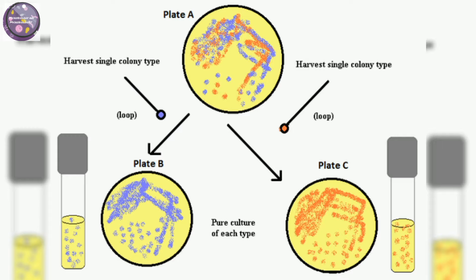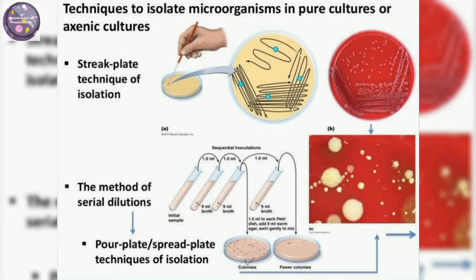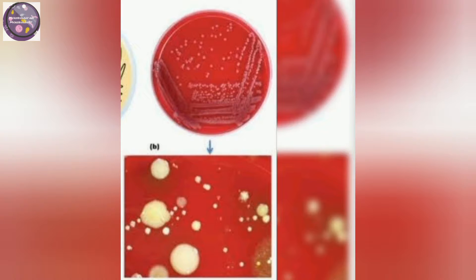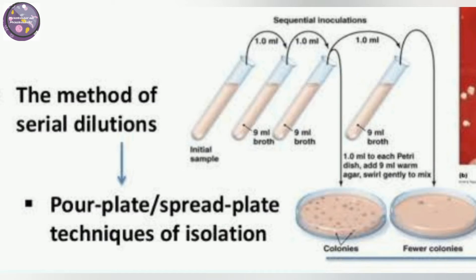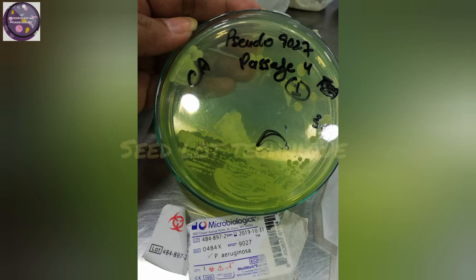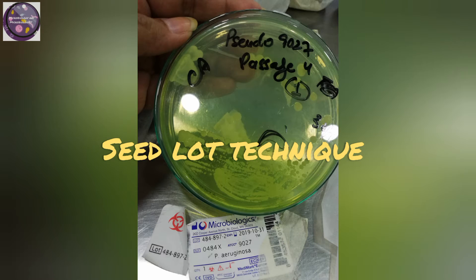There are different methods for pure culture isolation techniques. Number one is streak plate technique of isolation. Number two is serial dilution. The third one is pour plate or spread plate technique of isolation.